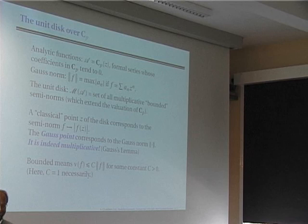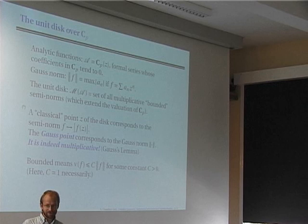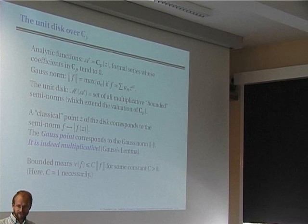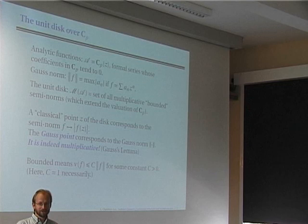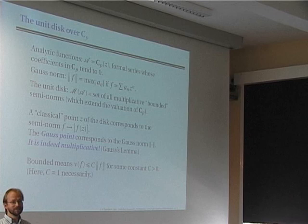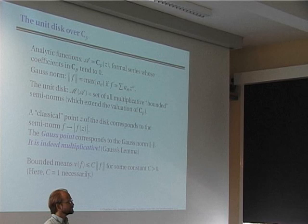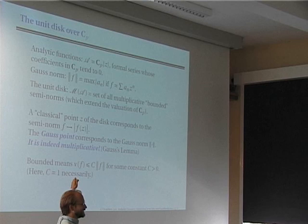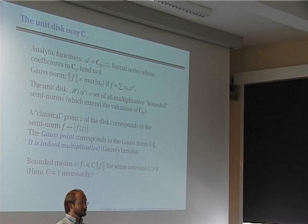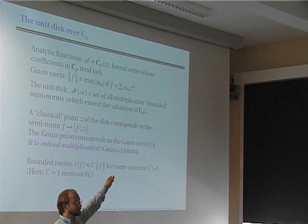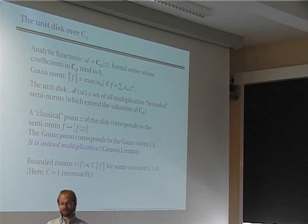On this space of analytic functions A, I have a norm which is the maximum of the norms of the coefficients — taking the power series and the maximum over n of |a_n|. The theorem of Gauss tells you that this norm is multiplicative. So the Berkovich unit disk is defined as M(A) — the Berkovich spectrum of A — which is the set of all multiplicative semi-norms extending the valuation of ℂ_p that are dominated by the Gauss norm.